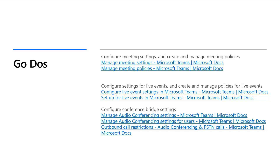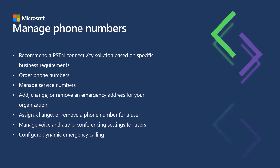Let's move on to managing phone numbers. In this section of the exam, you're going to be expected to know a lot of specifics around how PSTN works within Microsoft Teams. We'll cover recommending a PSTN connectivity solution based upon specific business requirements — that could be phone system, calling plans, or phone system with direct routing. You'll also need to understand how to order phone numbers with the Teams admin center, how to manage service numbers, how to add, change, or remove an emergency address, how to assign or change a phone number for a user, managing voice and audio conferencing settings for users, and how to configure dynamic emergency calling.